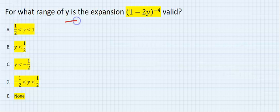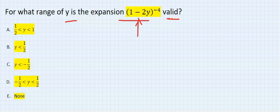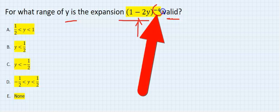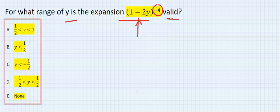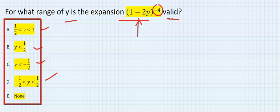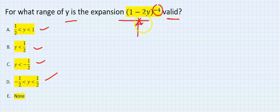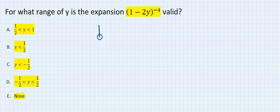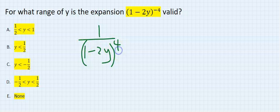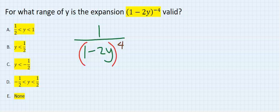For what range of y is this expansion valid? This is not asking you to expand the bracket. Looking at the top, we have a minus four power. We need to check which range makes this binomial expansion valid. Let's rearrange: this is the same as one over (1 minus 2y) all to the power of four — which is the same as finding the domain of this function.